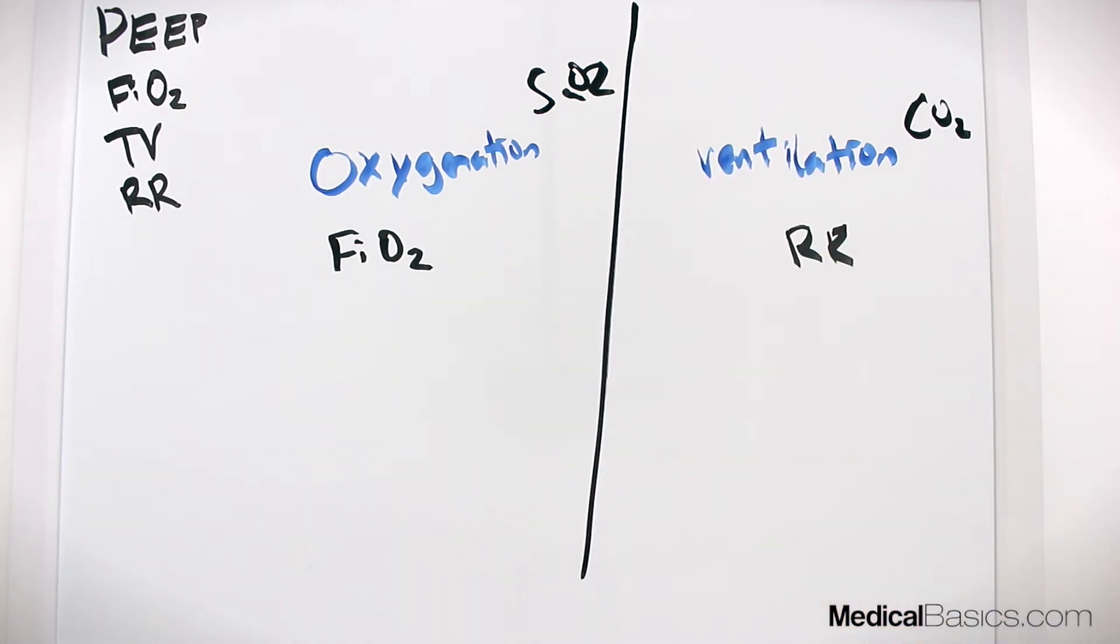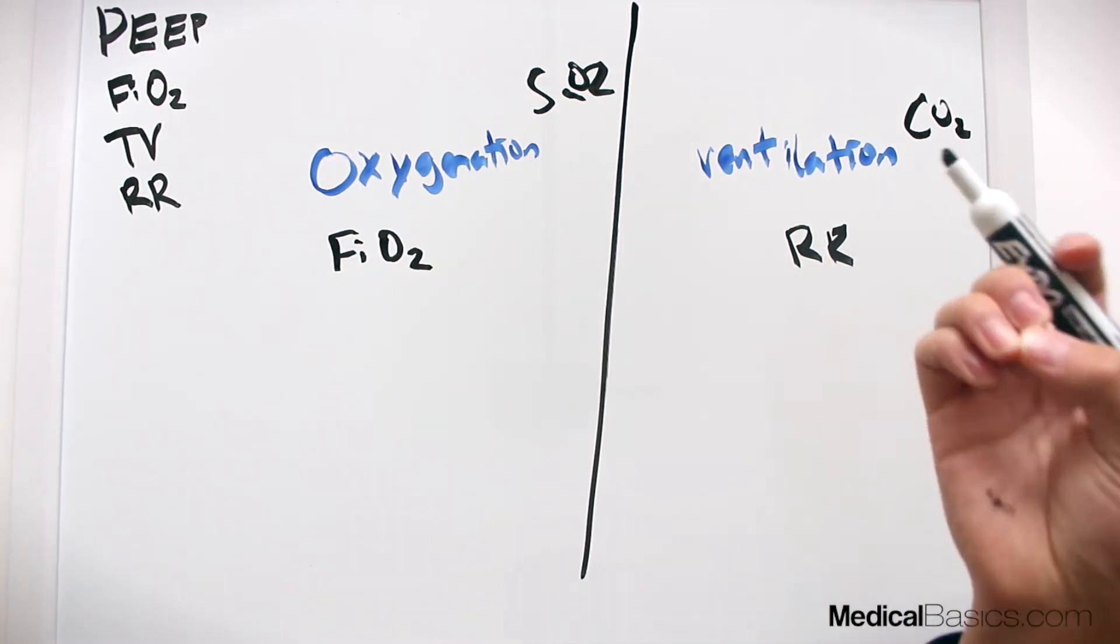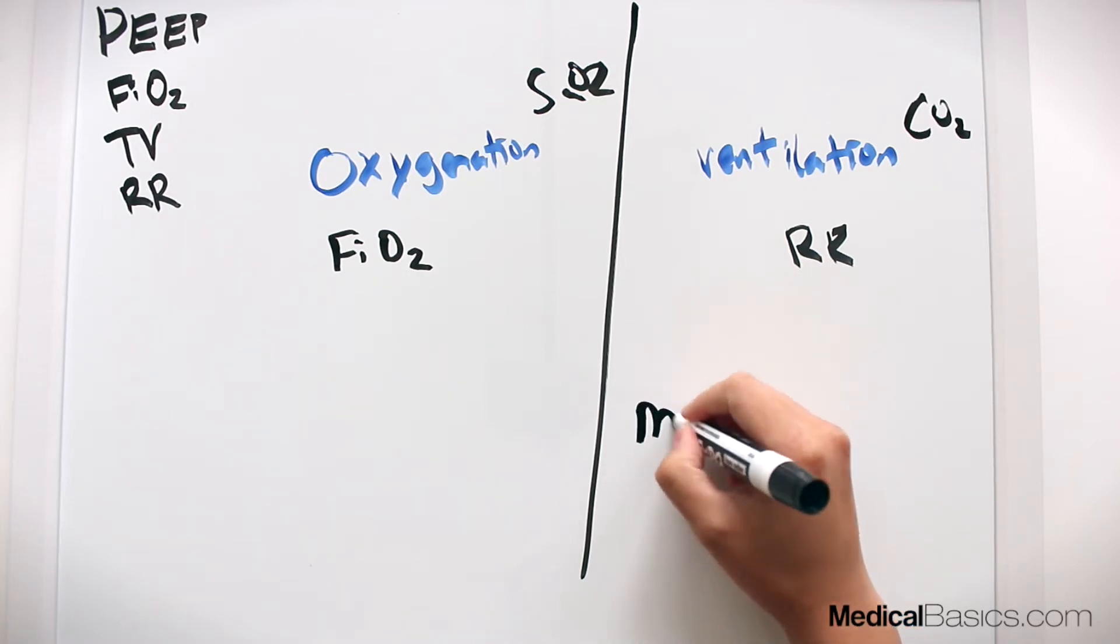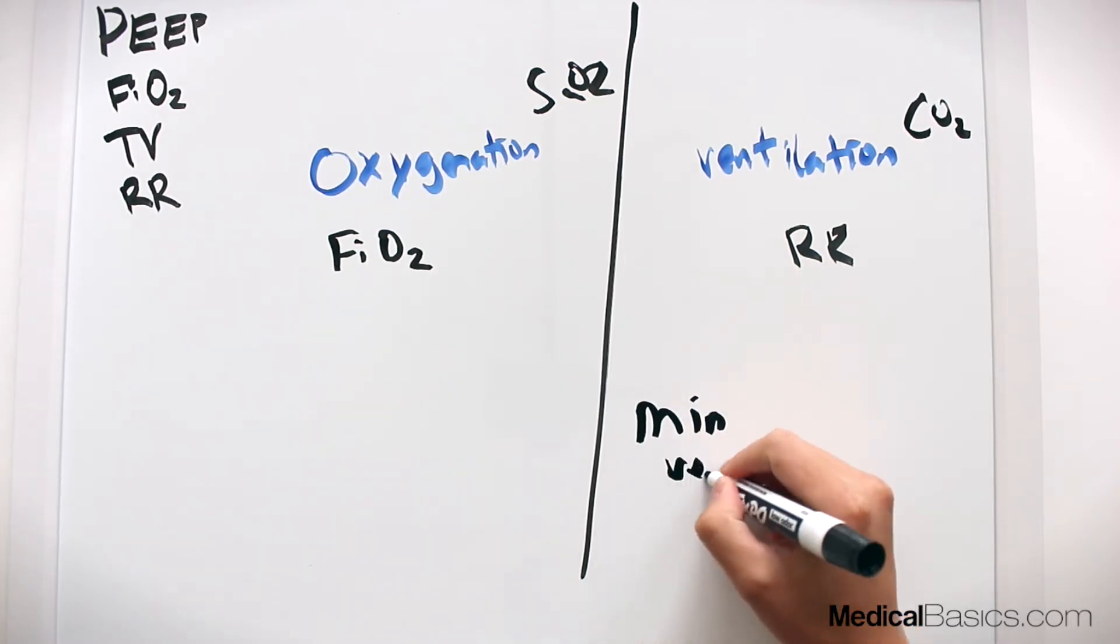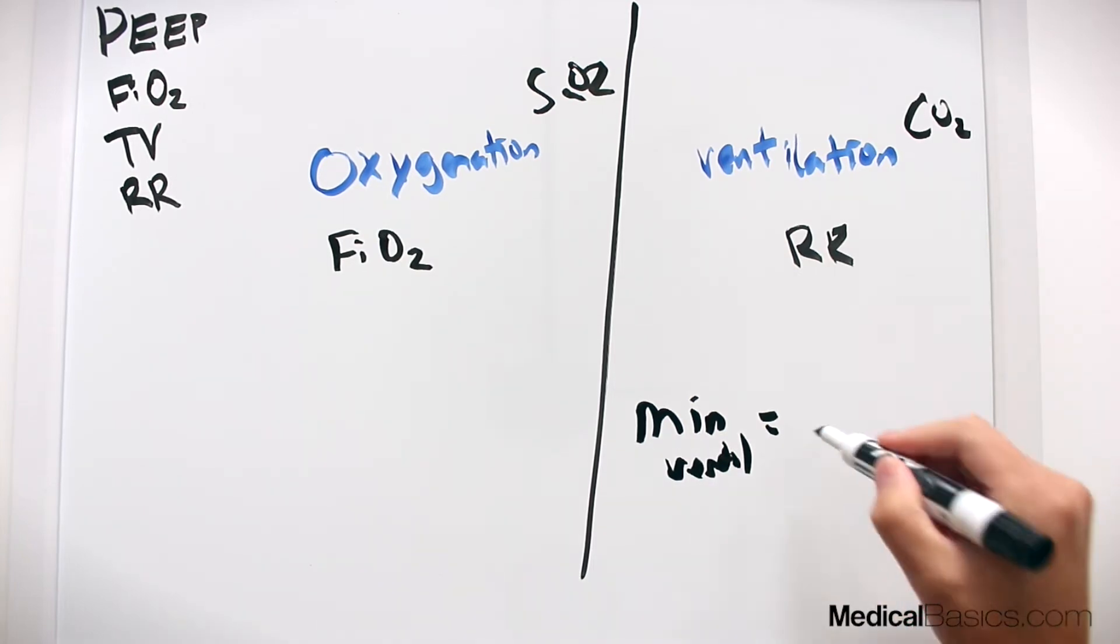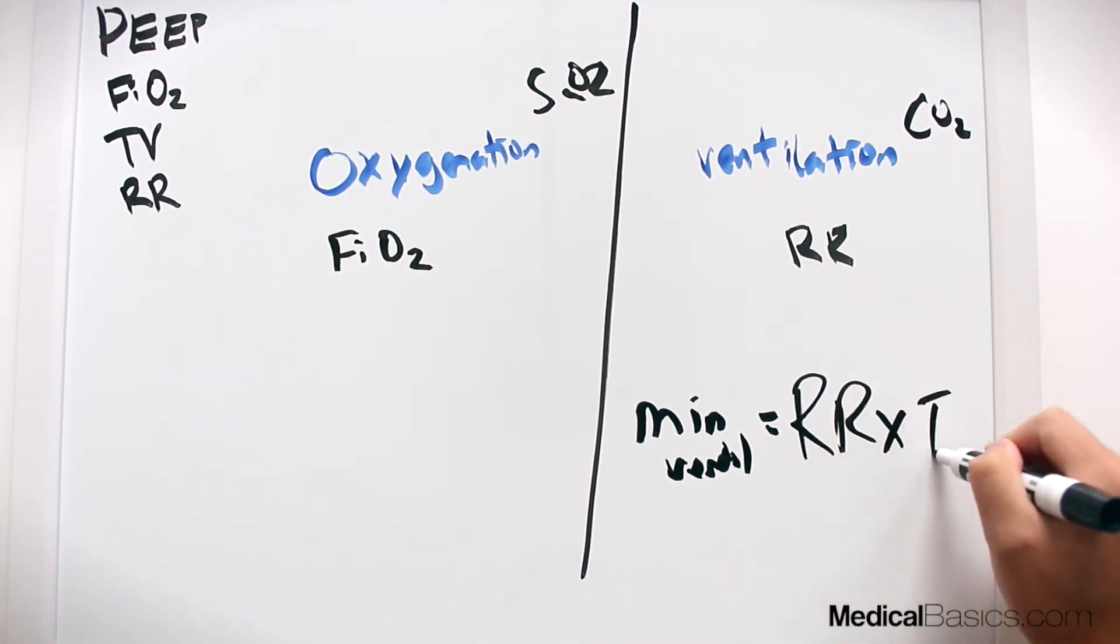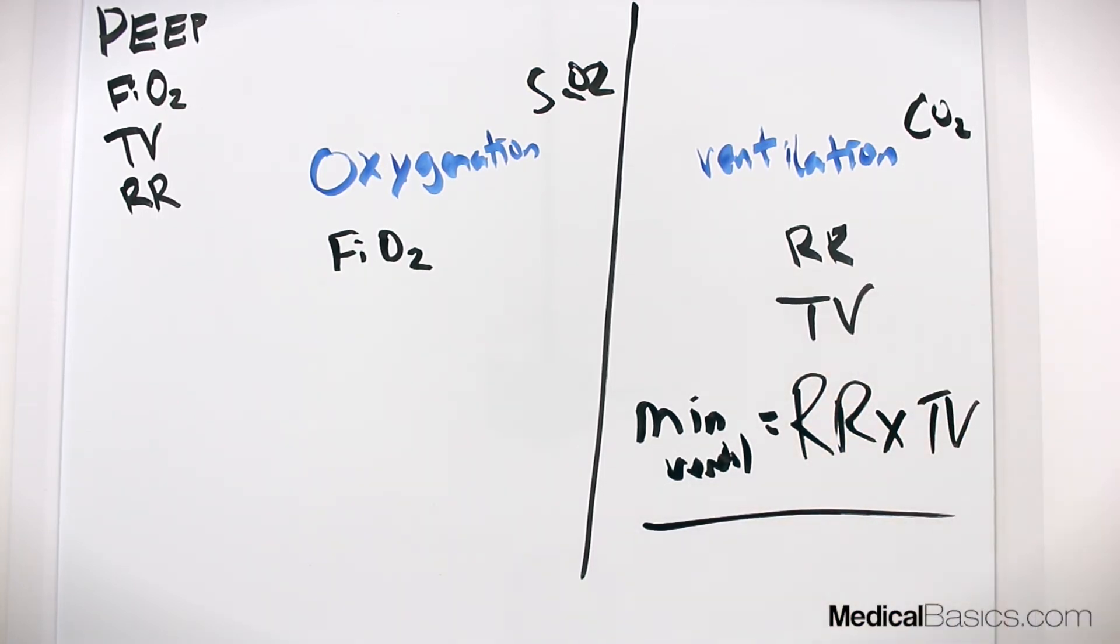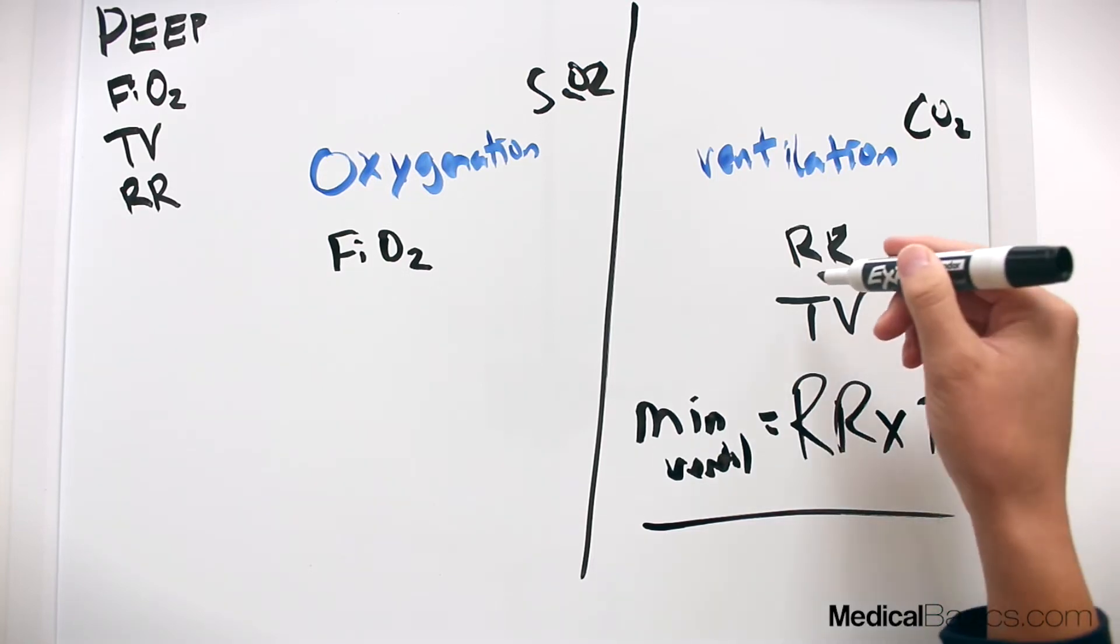But then the next thing is a little bit more complicated or a little bit hard to remember. How do you know which one goes where? How do you know what affects ventilation and what affects oxygenation among PEEP as well as tidal volume? I think the easiest way to remember this is minute ventilation. Remember this is the amount that you're ventilating every minute: respiratory rate times tidal volume. So if you want to affect ventilation, you're going to affect tidal volume as well as respiratory rate.